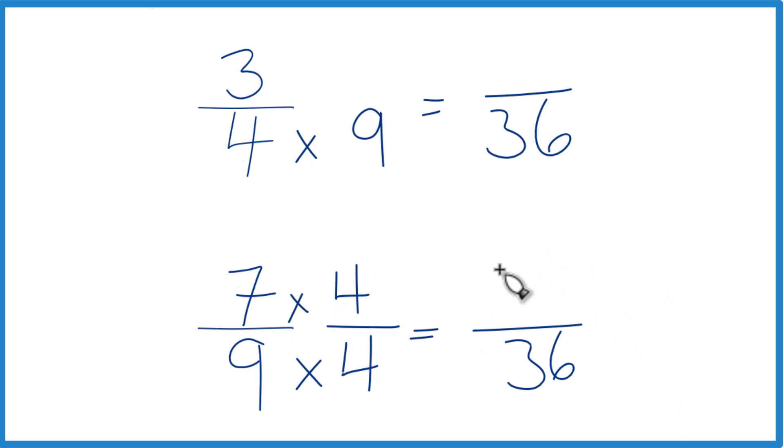So 7 times 4, that's 28. 28 over 36, that's an equivalent fraction to 7 ninths. They have the same value.